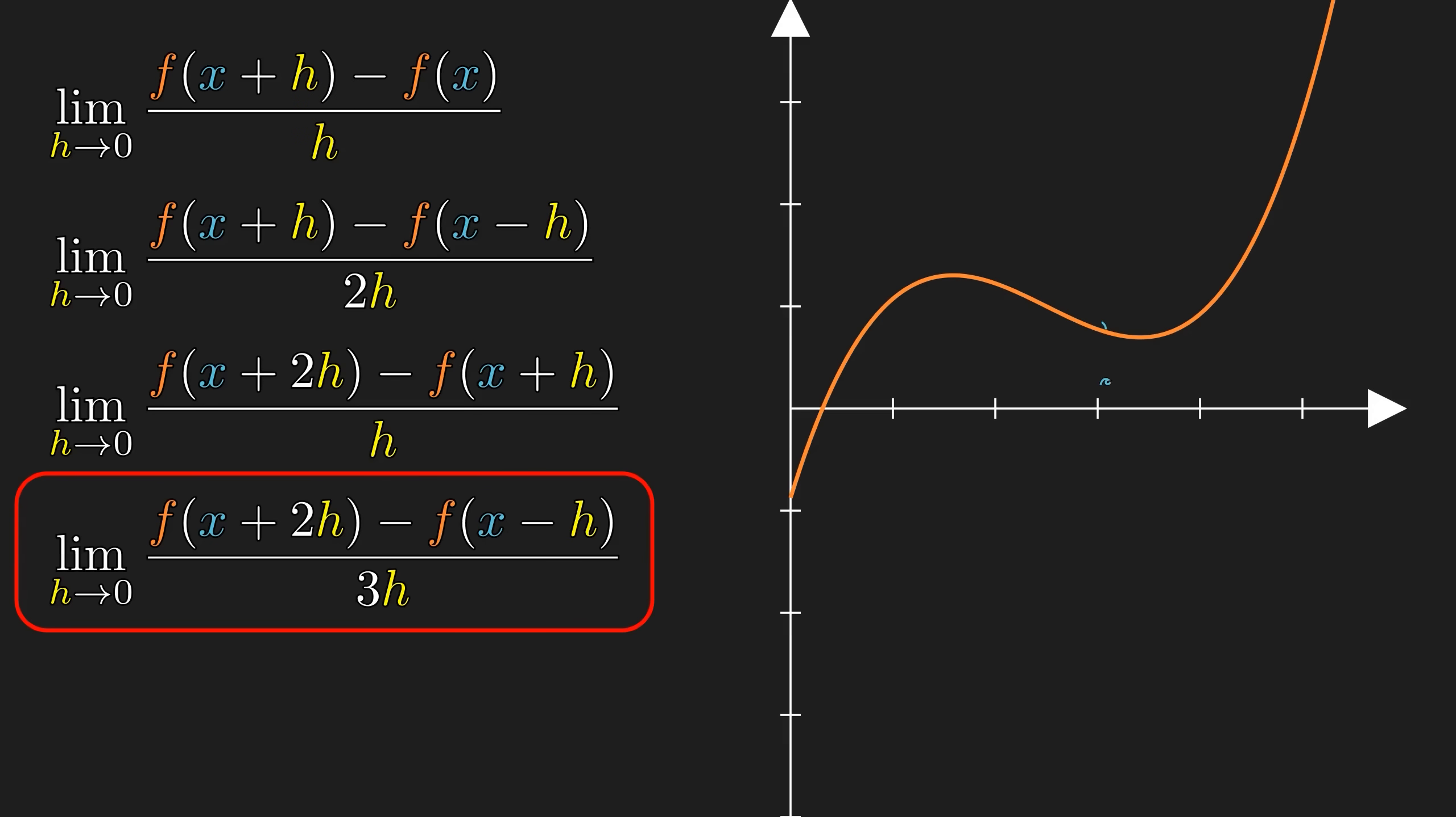Let's take a closer look at the last one. On the numerator, we have f of x plus 2h and f of x minus h. So in order to get the secant slope, we have to divide by 3h. Right now, the value of h is 1, but it can take on any number, even negatives. But once we take the limit as h goes to 0, this should give the correct value of the tangent slope.